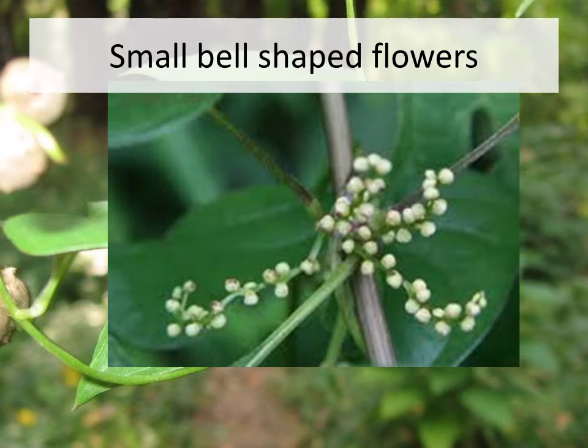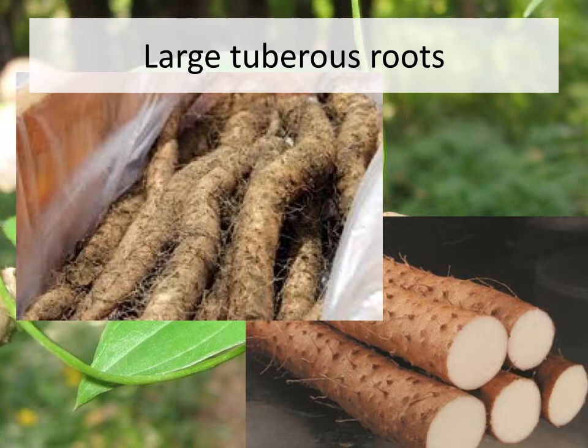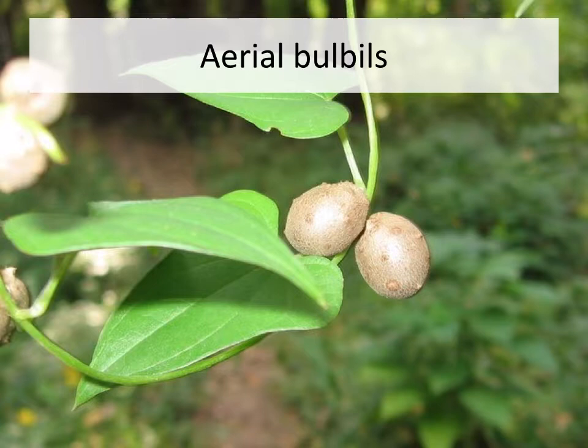It is difficult to find a good picture of the flowers. At the sites I have been to, I've never observed the flowers growing, but Chinese Yam does produce small bell-shaped flowers arranged in spikes at the end of its branches. Its tuberous roots are very large and can be eaten. In fact, if you google Chinese Yam, cooking pictures are way more prevalent than identification images.